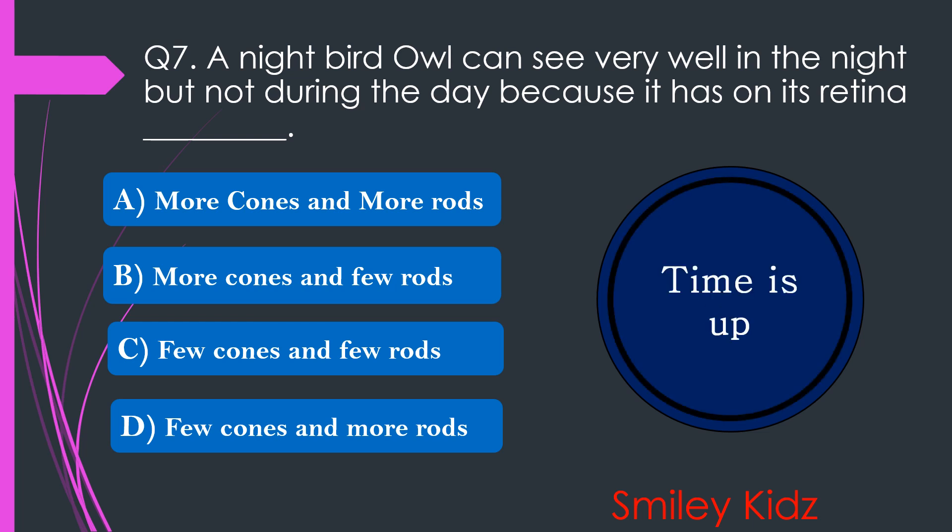Your time is up and the right answer is option D. Few cones and more rods. A night bird owl can see very well in the night but not during the day because it has on its retina few cones and more rods.